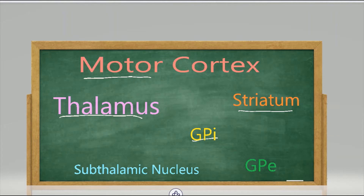The mnemonic here is: motor is going to be for 'move', striatum is going to be for 'straight', 'into' is for internus, and thalamus.